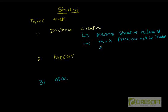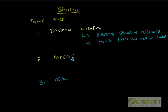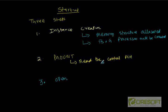In the mount stage, the instance reads the control file, because the instance will read the control file to locate where the data files are and where the redo log files are. So the second thing that happens in mount is it locates the data files and redo log files.